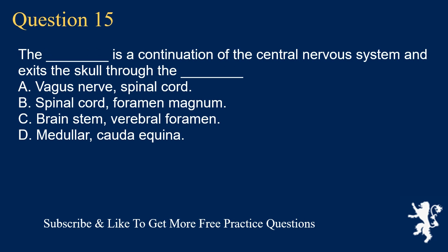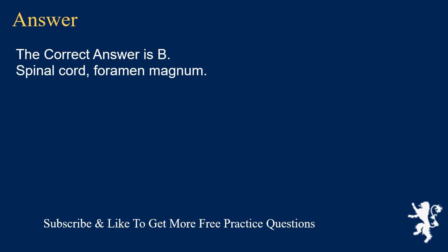Question 15. The underscore is a continuation of the central nervous system and exits the skull through the underscore. A. Vagus nerve, spinal cord. B. Spinal cord, foramen magnum. C. Brain stem, vertebral foramen. D. Medulla, cauda equina. The correct answer is B. Spinal cord, foramen magnum.